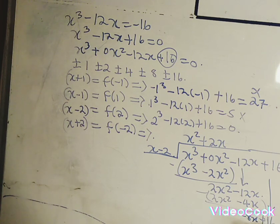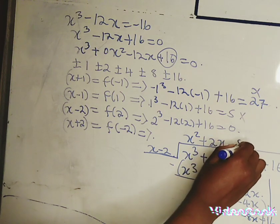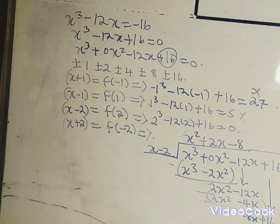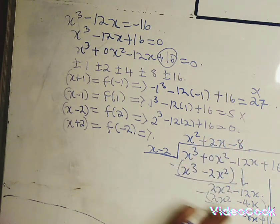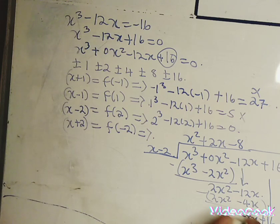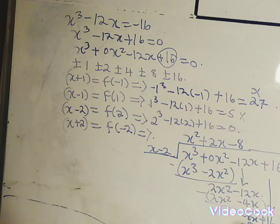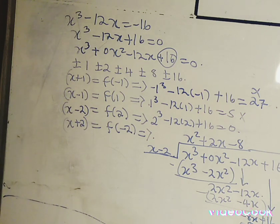We have negative 8x and we bring down the positive 16. x into minus 8x gives minus 8. Minus 8 times x is minus 8x, and minus 8 times minus 2 is positive 16. When we subtract, this gives us 0.